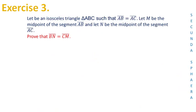The last exercise of this video is going to be a little bit more interesting than the others. Let ABC be an isosceles triangle such that the sides AB and AC are equal. Let M be the midpoint of the segment AB and let N be the midpoint of the segment AC. We are asked to prove that the segments BN and CM are equal.